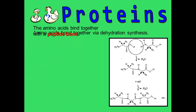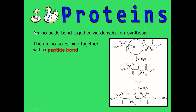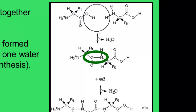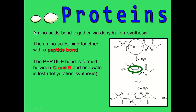Amino acids are bound together by dehydration synthesis. Because it's dehydration synthesis, they lose a water, and when they lose that water they form a peptide bond. The peptide bond forms between the carbon from the carboxyl group of one amino acid and the nitrogen from the NH group of the other.